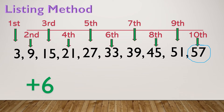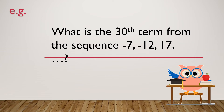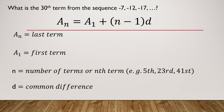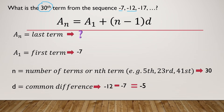Let us have another example. We need to find the values required to use the arithmetic sequence formula. The last term remains unknown. The first term is negative 7, which is the first number in the given sequence. The number of terms: this time we are asked for the 30th term, so n equals 30. For the common difference, we subtract the second term by the first term: negative 12 minus negative 7, which gives us negative 5.